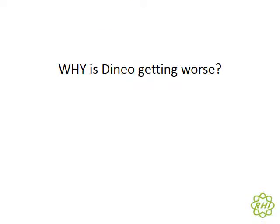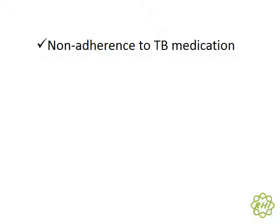So why is Denio getting worse? By far the biggest reason why people don't improve is adherence. Although we get very worried about resistance, first make sure the patient has actually been taking their TB treatment. The second reason — which we will discuss in detail — is IRIS. When a patient gets worse on TB treatment, especially after starting ARVs, it might be part of an IRIS picture.